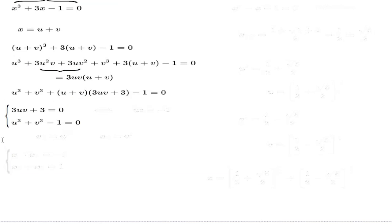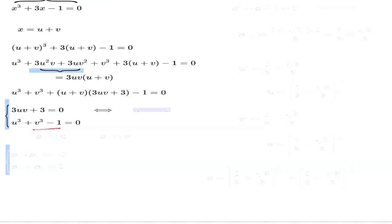So now, remember we're looking for U and V, which are connected to the original unknown X. Our U and V are subject to these two relations. The first says U plus V equals X, and transforming the second relation a little bit gives us U times V equals negative 1.